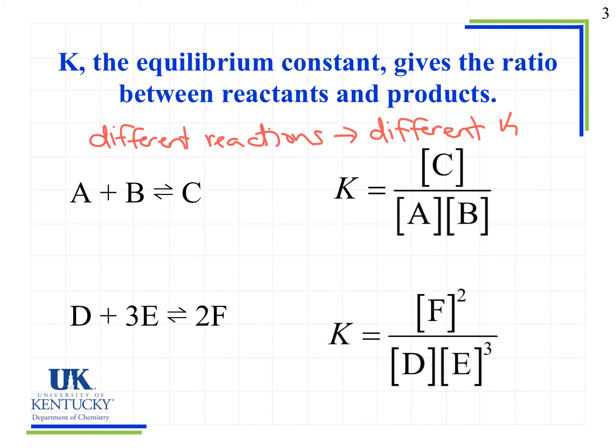If we look down here at the bottom reaction where we have coefficients of 3 and 2, because remember, no coefficient means a coefficient of 1, that difference is reflected in our K expression, so we'd have F to the second power because of the coefficient there. Again, what we're worried about is the general setup of products over reactants.